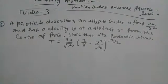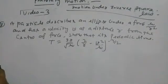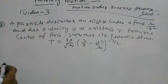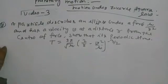Periodic time T = 2π/√μ × (2/r - v²/μ)^(-1/2), which equals 2π/√μ × (2/r - 1/a)^(-1/2).